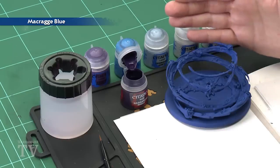Now the first thing we're going to need to do is undercoat the model and as you can see here I've used Macragge Blue. This is a good starting point for this color scheme.